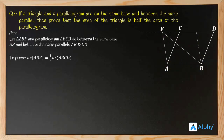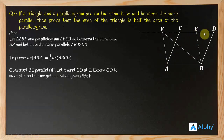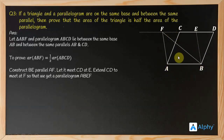Construct BE parallel to AF. Let it meet CD at E — and we extend CD to meet at a point F. So now ABEF is a parallelogram, because we drew this line parallel to that one and this line parallel to the other; the resulting figure is a parallelogram. This completes the first part of the construction.